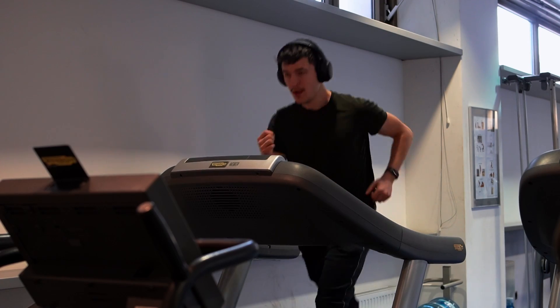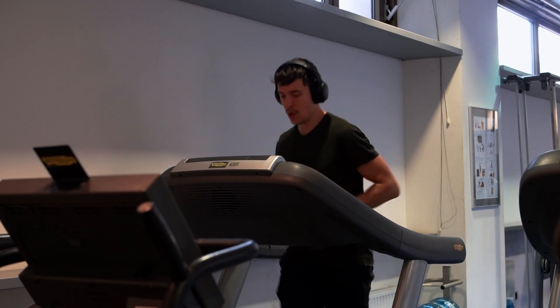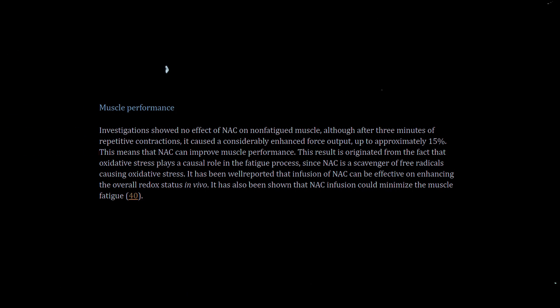Another factor is breathing rate and lung function. One of the main uses of NAC is mucus thinning, because it thins out the mucus in the lungs, potentially allowing for easier breathing. This is why it has been used in asthma. Theoretically, this may improve lung function, serving as a potential tool to enhance aerobic function for activities like running, jumping, swimming, and hiking. Research shows NAC improved force output by 15% after three minutes of repetitive contractions, showcasing the potential to improve muscle performance.